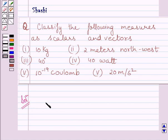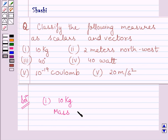The first part is 10 kg. We know 10 kg is mass, and mass is a scalar quantity. Kilograms is a unit of mass, and mass has magnitude but no direction, so it is a scalar quantity.